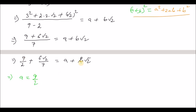Comparing the irrational parts: b root over 2 equals 6 root over 2 divided by 7, so root over 2 cancels and b equals 6 over 7. Therefore the answer is a equals 9 by 7 and b equals 6 by 7.